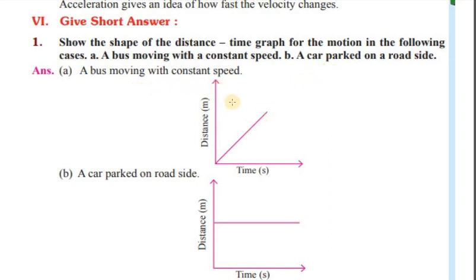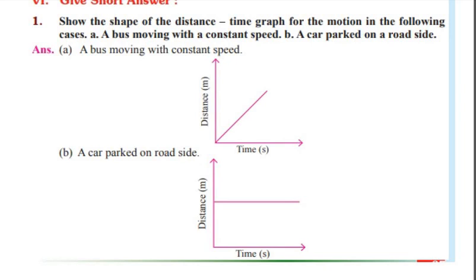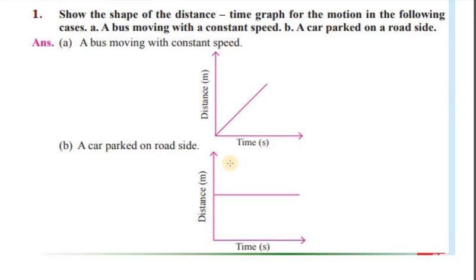For a bus moving with constant speed, the distance-time graph is a straight inclined line. For a car parked on the roadside, the distance-time graph is a horizontal line, representing uniform motion with zero speed.